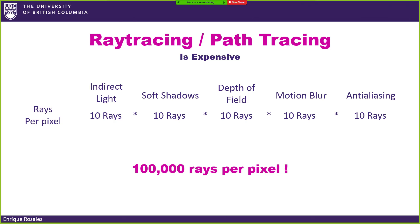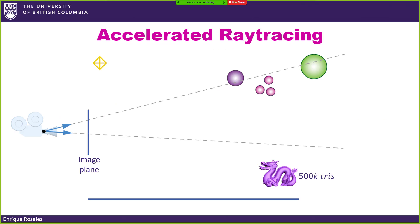The most expensive part of ray tracing is that for every ray we send, we need to check if it's intersecting with basically all the objects in the scene. If we have one million triangles in our scene, every new ray needs to check intersection with one million triangles — that is impressively expensive.